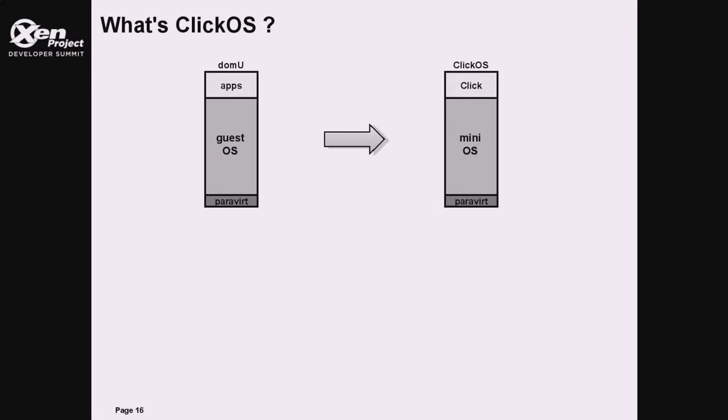So what is ClickOS then? As we know, in a paravirtualized virtual machine there is a slightly modified guest kernel with applications running on top. In the case of ClickOS, we use MiniOS as the guest operating system. It has a single address space, which means no system calls, and a cooperative scheduler. On top of MiniOS, we run Click, and we call the whole thing ClickOS.